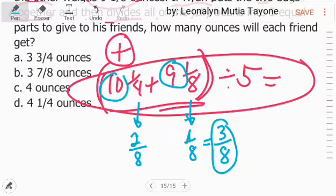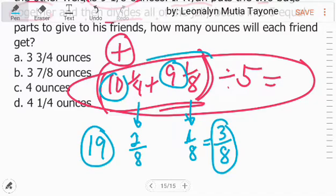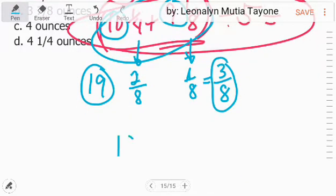Now add the whole numbers. 10 plus 9 and that is 19. So what's inside the parenthesis is equivalent to 19 and 3/8.